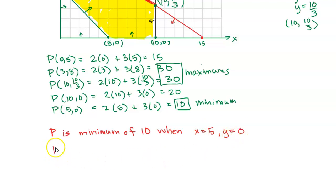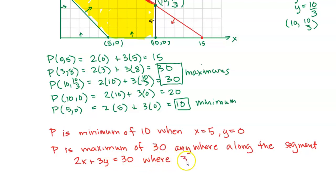Now the maximum is 30, but it doesn't just occur at one point or even just the two points. It actually occurs anywhere along that line. So anywhere along the segment, and the segment is defined by 2x plus 3y equals 30, for x values between 3 and 10.